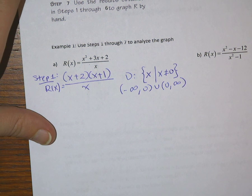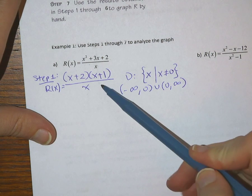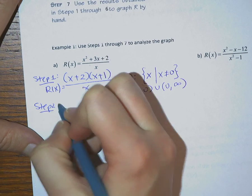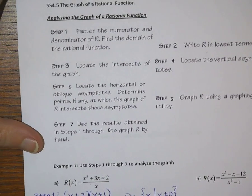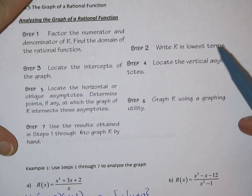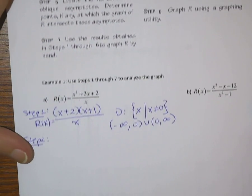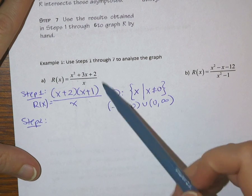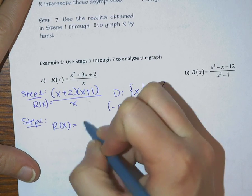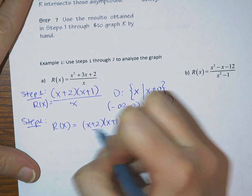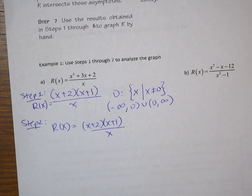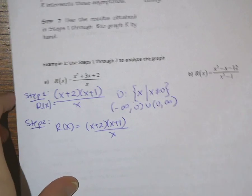Either notation works — same idea. We want to practice both. That's it for step 1: we factored where we could and found the domain. Step 2 is to write our rational function in lowest terms, so we want to look back at our function and see if we can simplify it. There's nothing to cancel or simplify, so our rational function remains as x plus 2 times x plus 1, all over x. Not much on this function to do for step 2.